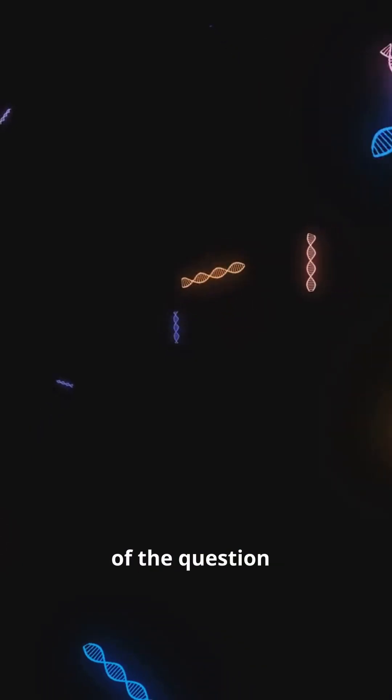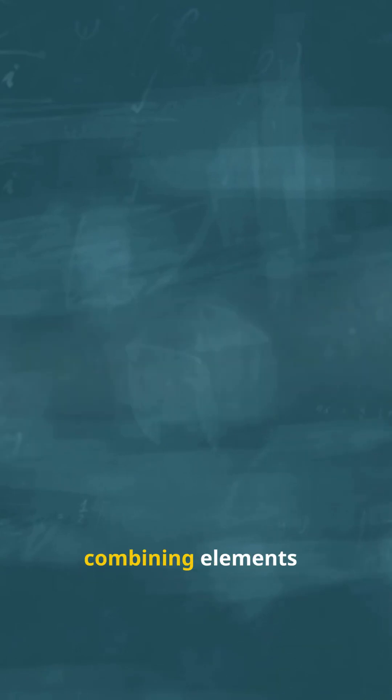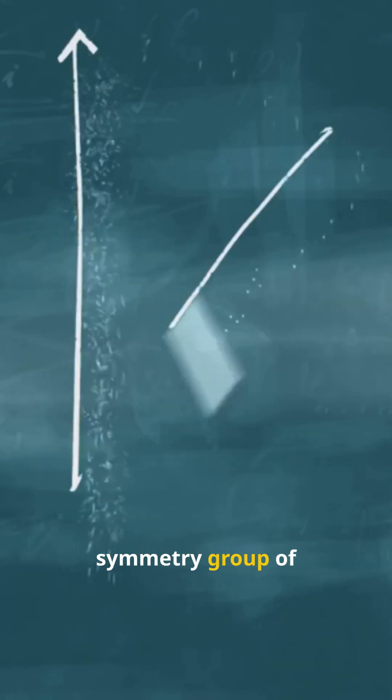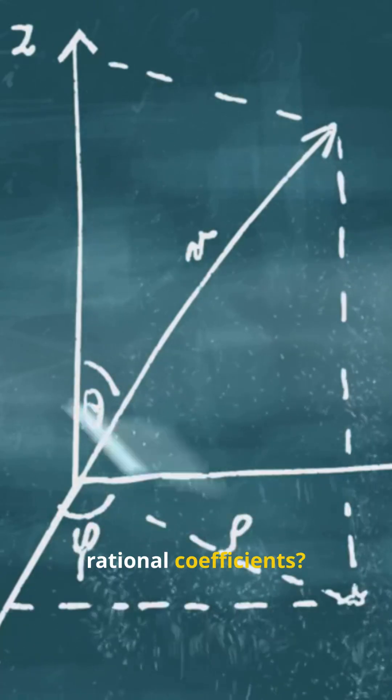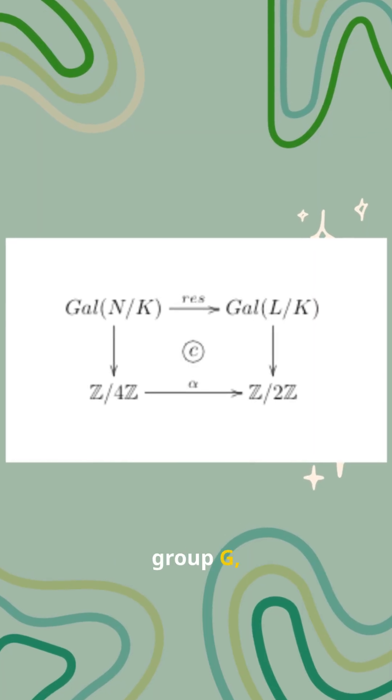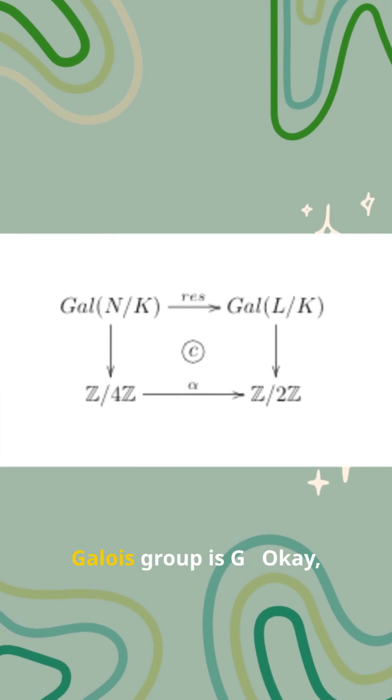Here's the heart of the question. For any group you can write down, think of a set with some rules for combining elements. Can you always find a way to make it the symmetry group of some equation with rational coefficients? In math speak, for every finite group G, is there a Galois extension of the rationals whose Galois group is G?